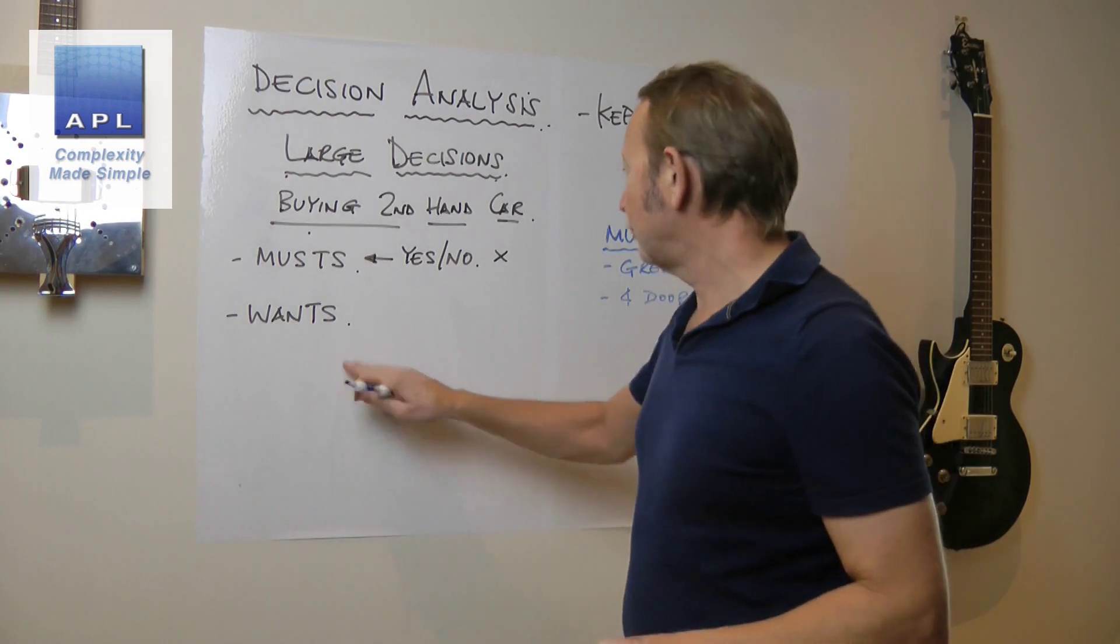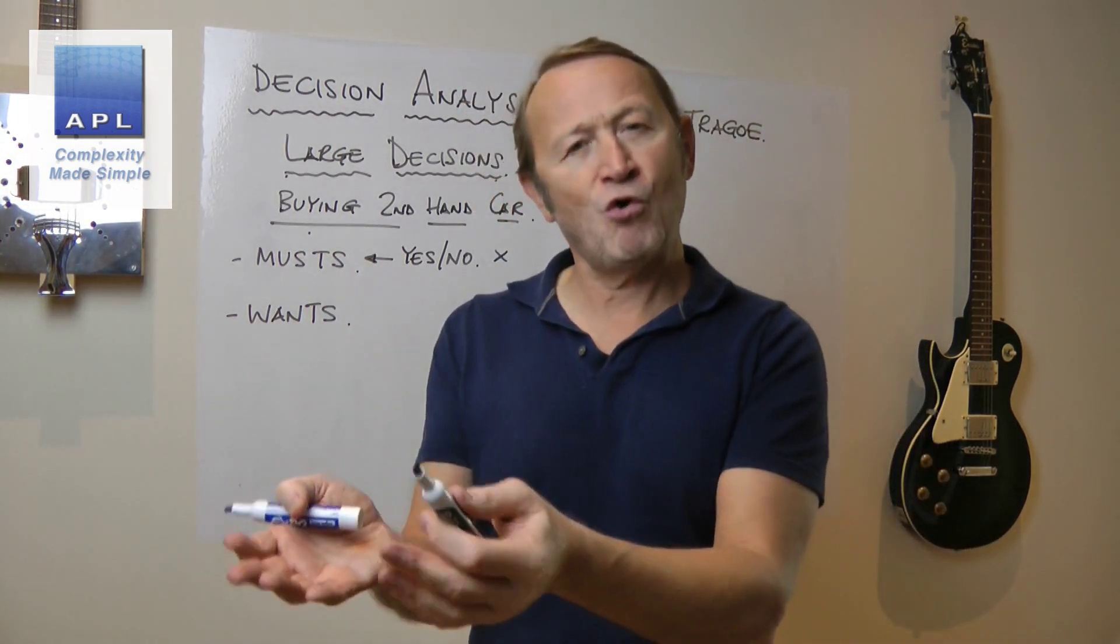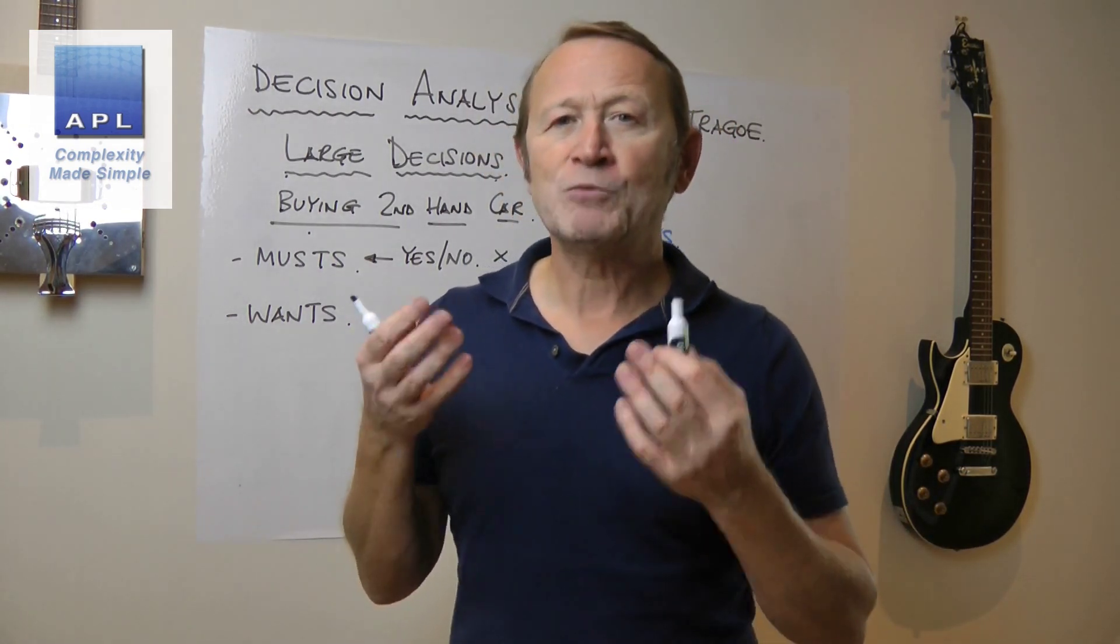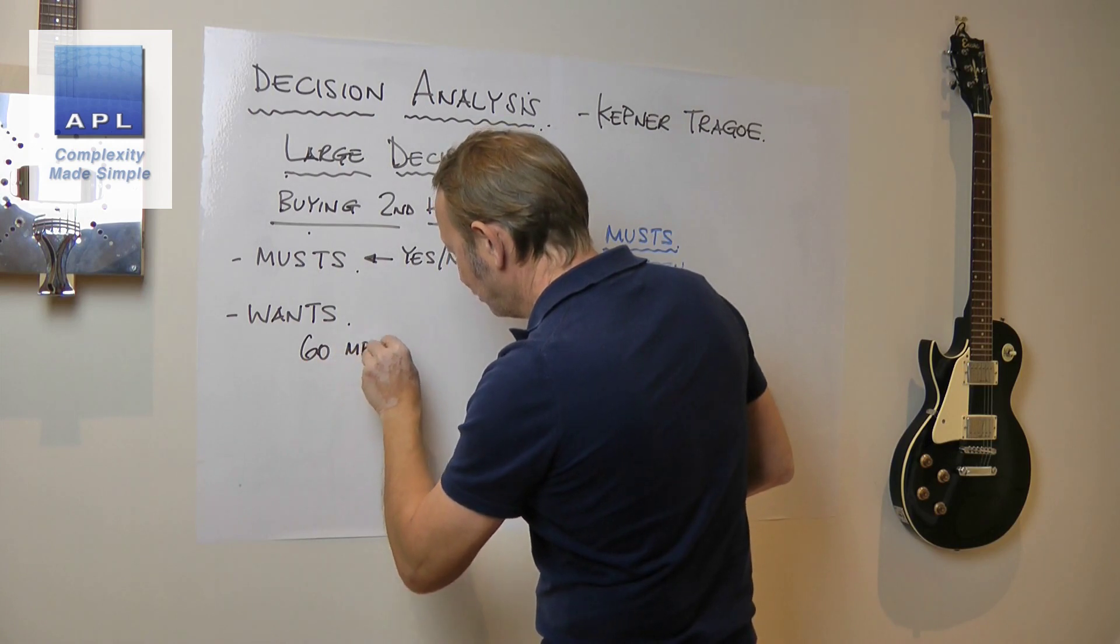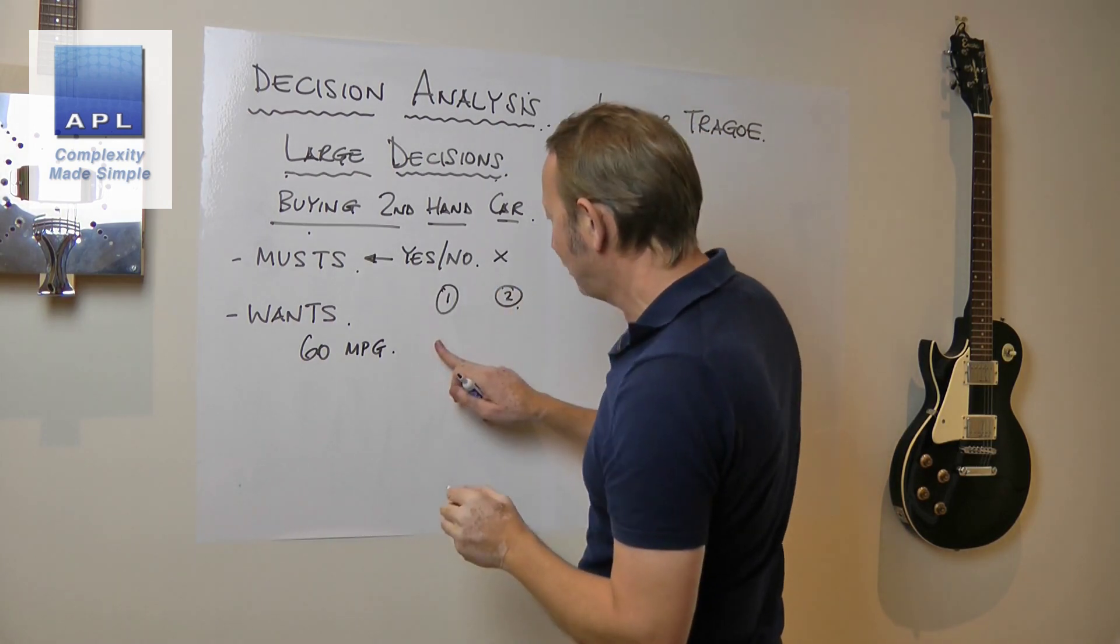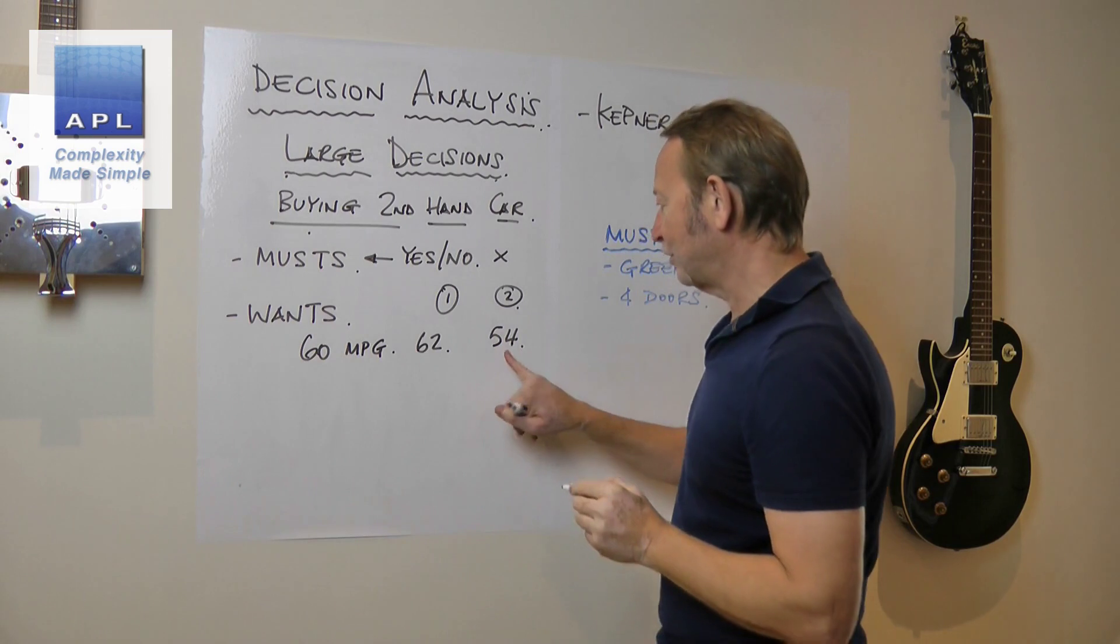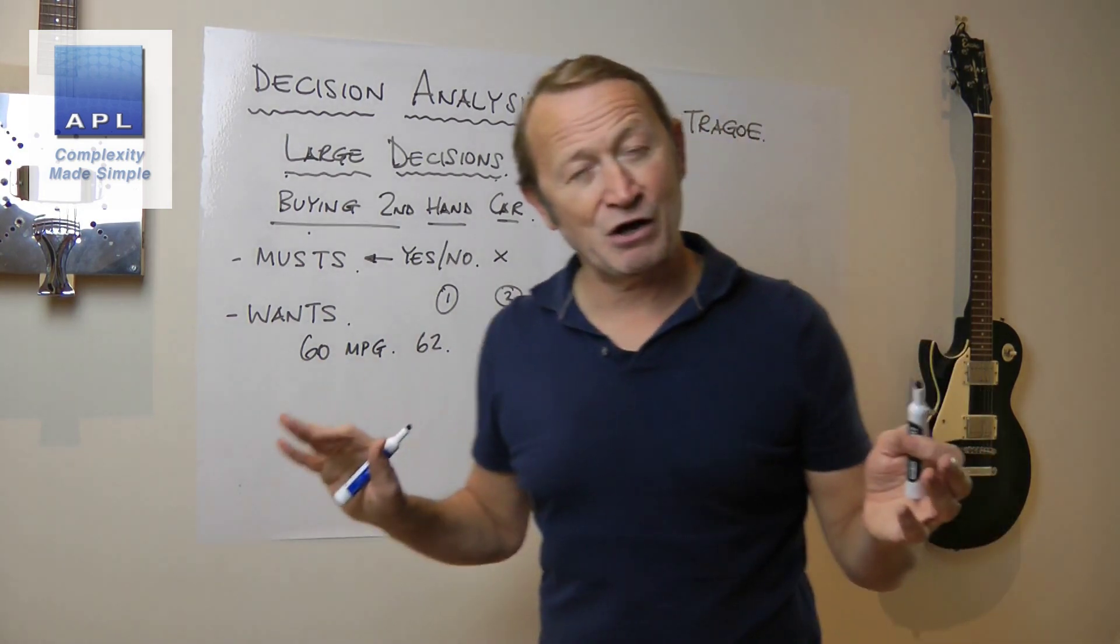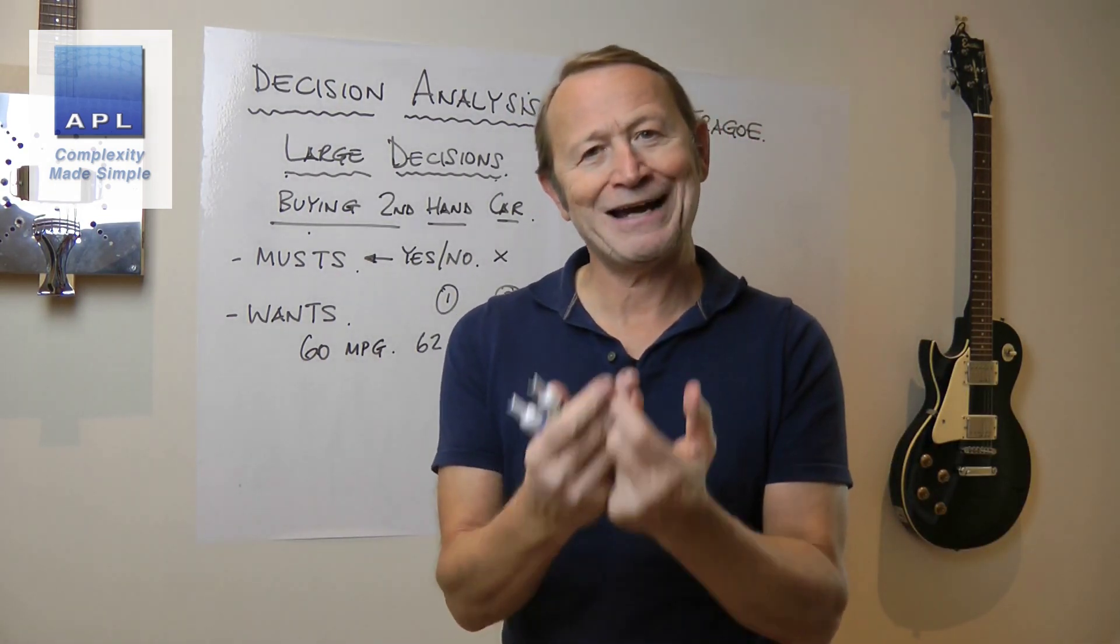Then you've got the wants. The wants are things that you can actually score potentially. For a car, you could be talking about how economical it is - maybe you'd like it to do 60 miles to the gallon. When you've got car one and car two, maybe car one does 62 to the gallon but this one only does 54. We can give it a score - it's close, it's not quite right, but we can score the solution against that criteria.